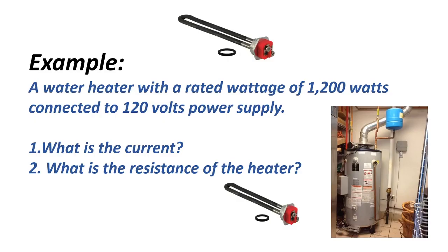Now let's proceed to our example. A water heater with a rated wattage of 1200 watts is connected to a 120-volt power supply. What is the current? And number two, what is the resistance of the heater?